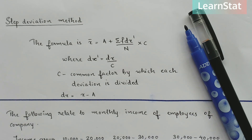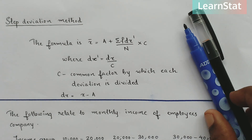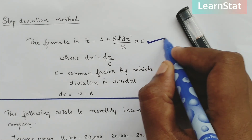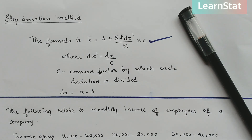The formula is: x-bar is equal to A plus sigma f dx-dash divided by N, into C. Where dx-dash is equal to dx divided by C. Here C is the common factor by which each deviation is divided, and dx is equal to x minus A, the assumed mean.